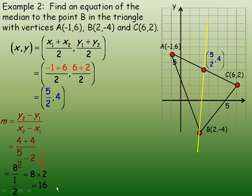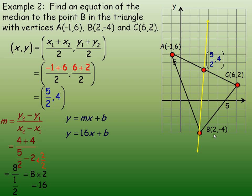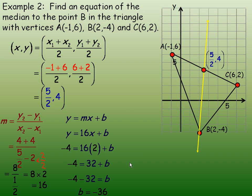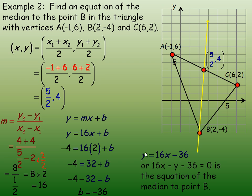A slope of 16 is reasonable — the line is quite steep. Now we find the y-intercept. We put 16 in place of m. To find b, we substitute an x and y value from a point on the line — I'll use point B, so y equals negative 4 and x equals 2. So 16 times 2 is 32. We subtract 32 from negative 4 to solve for b, giving b equals negative 36. The equation of the line is y equals 16x minus 36, or in standard form: 16x minus y minus 36 equals 0. That's the equation of the median to point B.